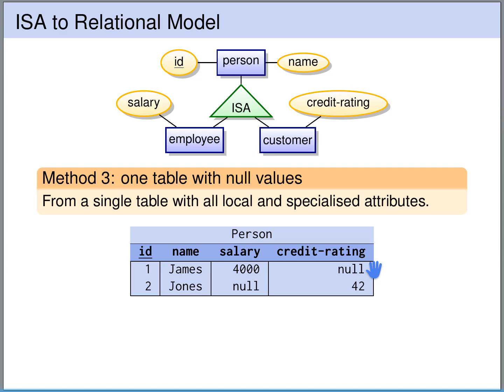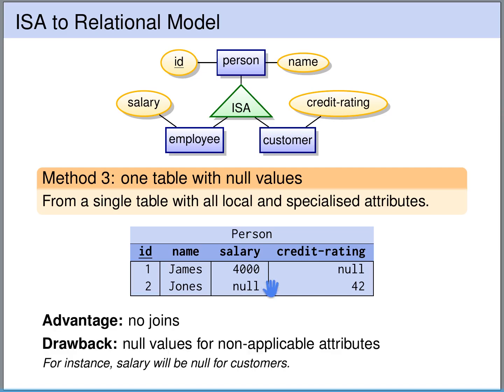So if we have an employee, this employee does not have a credit rating if they are not also a customer, so the credit rating will be null. If we have a customer that is not also an employee, then the salary of this customer will be null. The advantage is that we just have a single table, so we don't need any join operations — we will later see what join operations are when we discuss SQL. But the drawback is of course that we have a lot of null values in these tables, with all the disadvantages of null values that we have discussed.